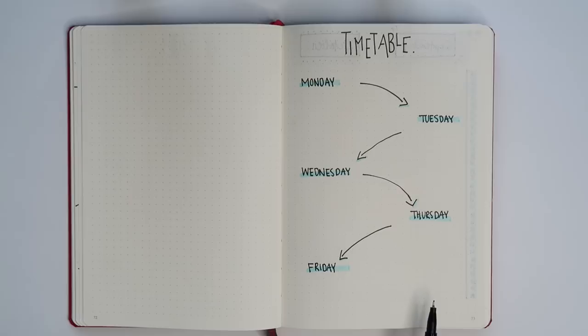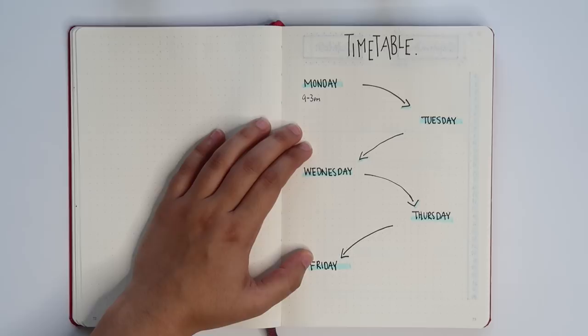So for Monday 9 to 3, clearly my head isn't working but this is just for example, so from 9 to 3 if you had this make-believe class of eco 100 that would actually be torture.